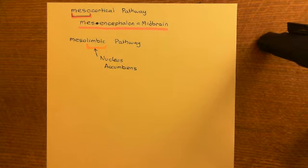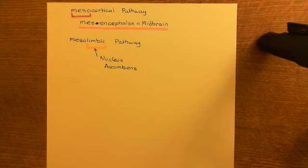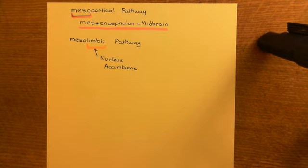As we currently understand it, the two places that the ventral tegmental area sends dopaminergic axons to are the cortex — that pathway is known as the mesocortical pathway — and the nucleus accumbens — that pathway is known as the mesolimbic pathway. We're going to look at the anatomy of both the mesocortical pathway and the mesolimbic pathway.